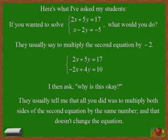So the reason that this is okay is that you just multiplied the second equation, the left side by negative 2, and the right side by negative 2, obtaining an equivalent equation.